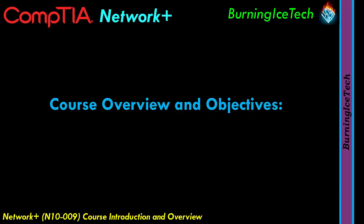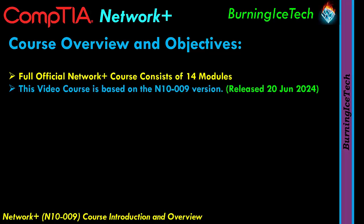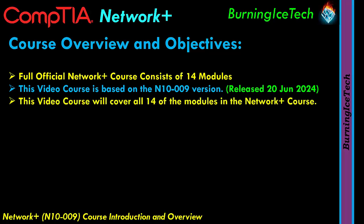As for the course overview and objectives, the full official Network Plus course consists of roughly 14 modules. This video course is based on the new N10-009 version, which was released in June 2024. Normally, every time CompTIA releases a version of a course, it lasts about three to three and a half years before they release a newer version, so you can do the math as to when it will be retired. This video course will cover all 14 modules.